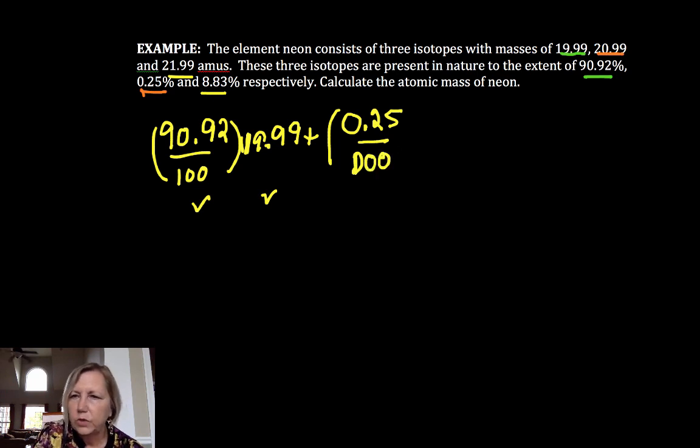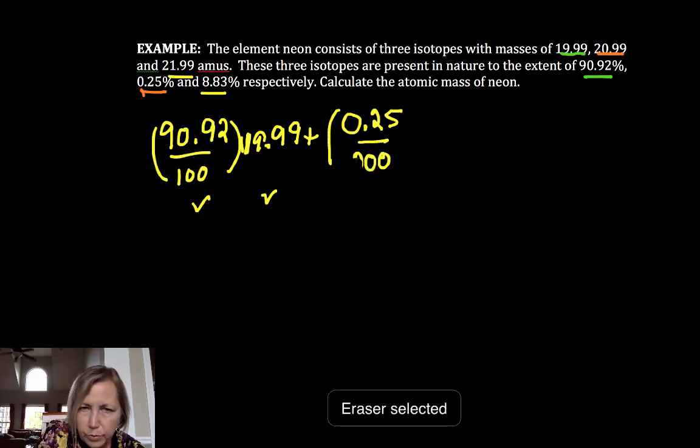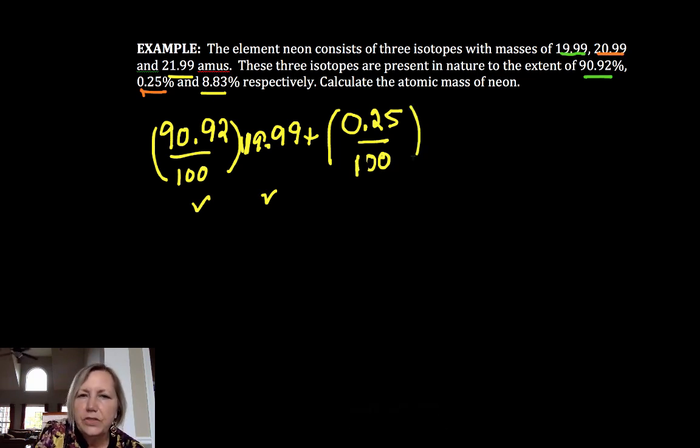Whoops, 100. Oh, that looks like dew because I'm making a doo-doo a boo-boo. There we go. Oh, Dina. Alright, 0.25 times 100, and then that would be times the 20.99.